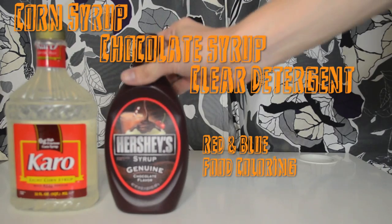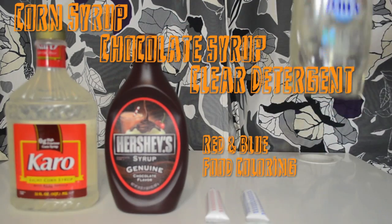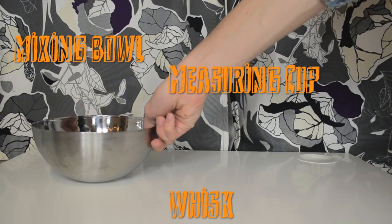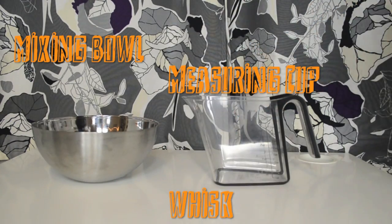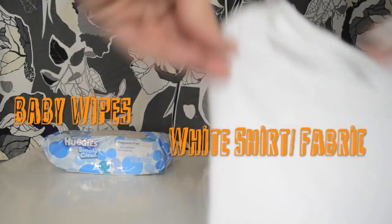Corn syrup, chocolate syrup, red food coloring, blue food coloring, clear dish or laundry detergent, a bowl for mixing, a measuring cup, a whisk, baby wipes in case you make a mess, and a t-shirt you don't mind ruining.